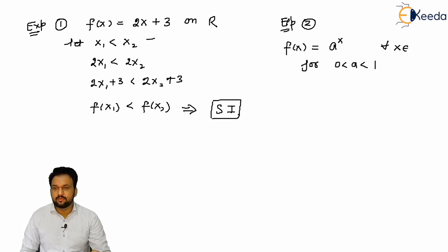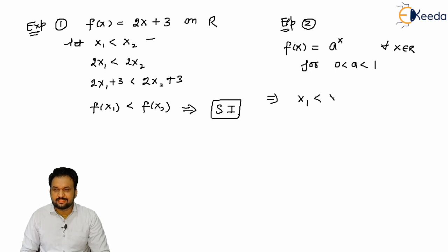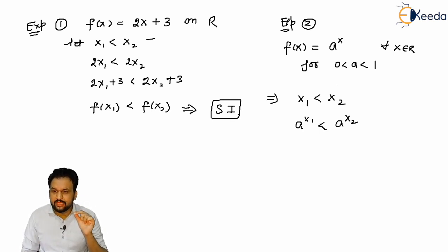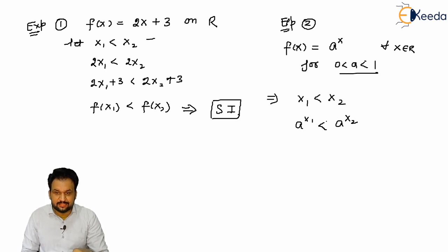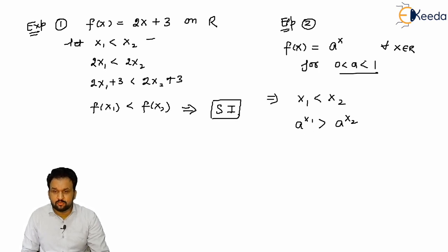Example two: consider the function f of x equal to a raised to power x, for all x belonging to R. We have two cases for the value of a. If a is greater than 0 and less than 1, and we take x1 less than x2, then a raised to power x1 is greater than a raised to power x2 — because a is less than 1. So the smallest point gives the greatest value, which means this function is strictly decreasing.